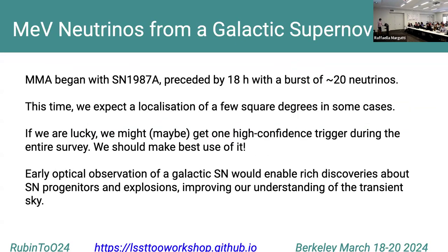There is another exciting type of neutrino messenger: a galactic supernova. Multi-messenger astronomy is nearly 40 years old — the first extra-solar-system multi-messenger source was Supernova 1987A, whose optical counterpart was preceded by 20 hours by a burst of just 20 neutrinos. Today we have much better detectors and can expect roughly 10,000 neutrinos detected at neutrino observatories, with a localization of maybe three to ten square degrees. We're probably lucky to get one of these in the entire lifetime of the Rubin survey, so we should make best use of it.